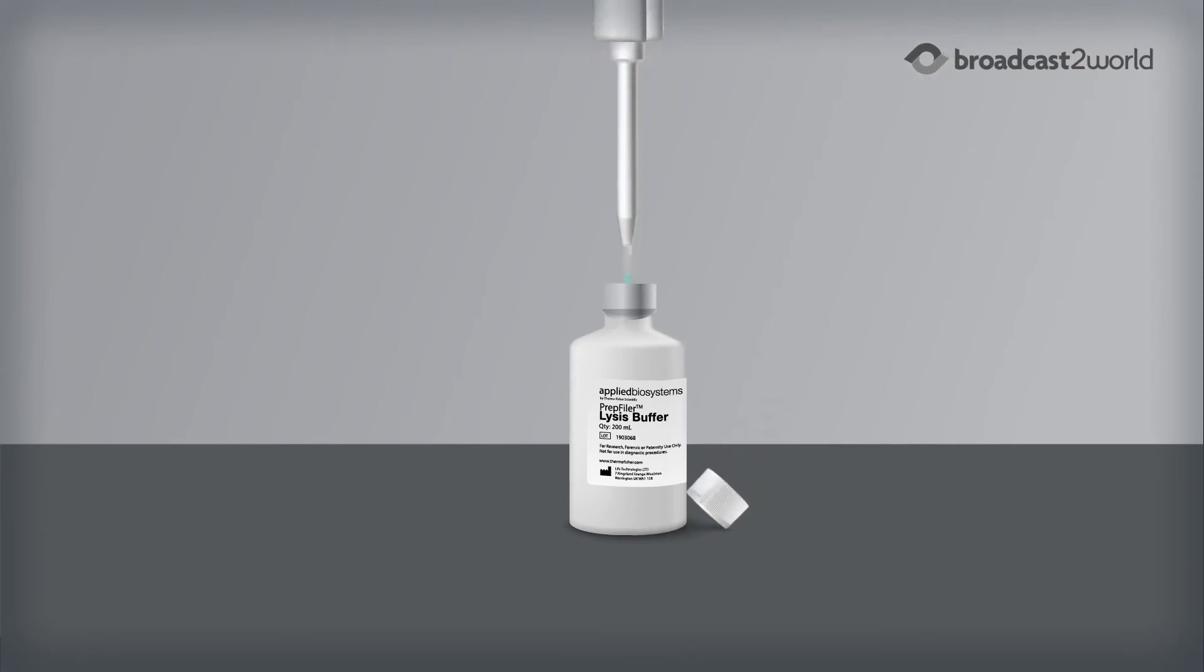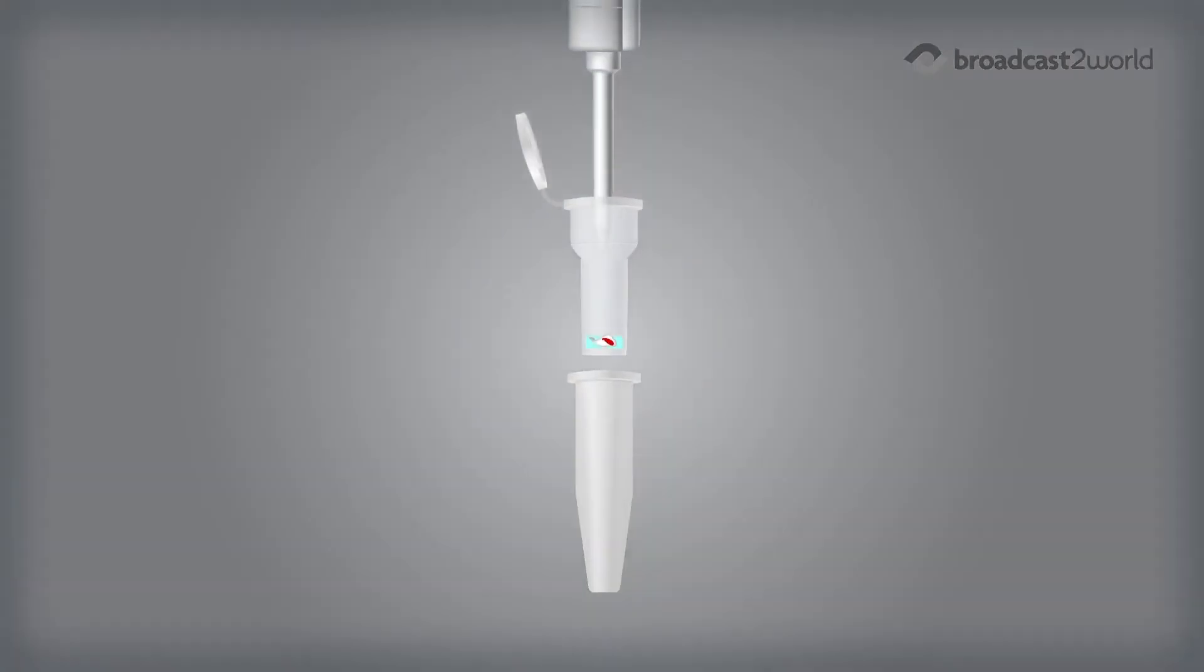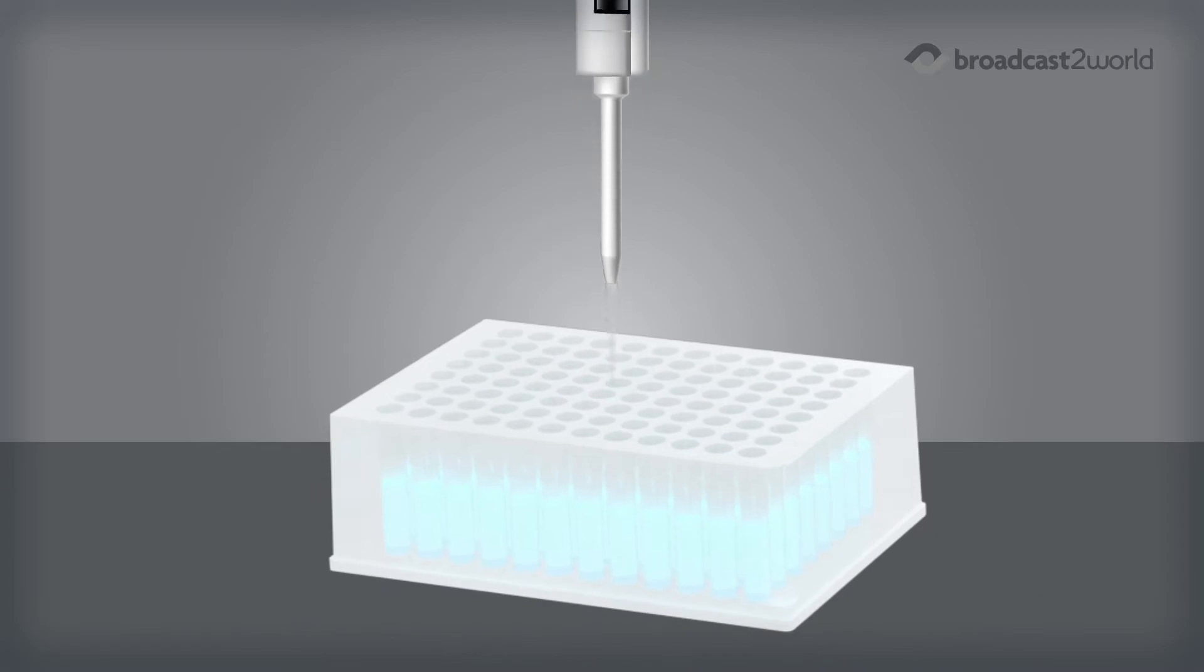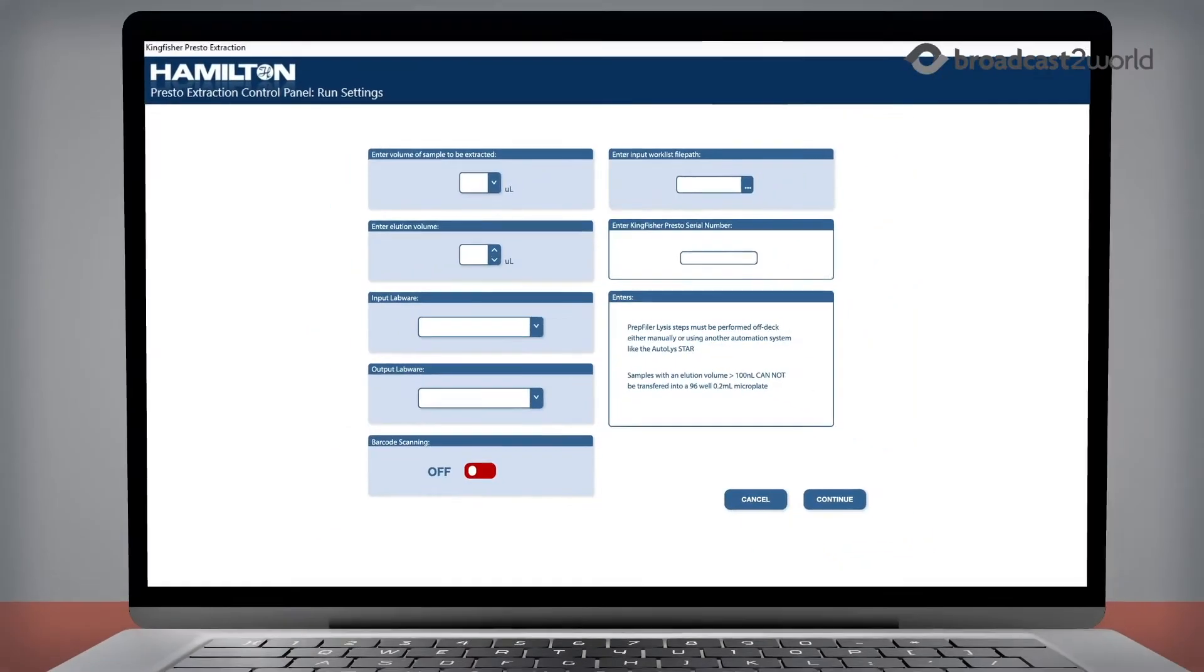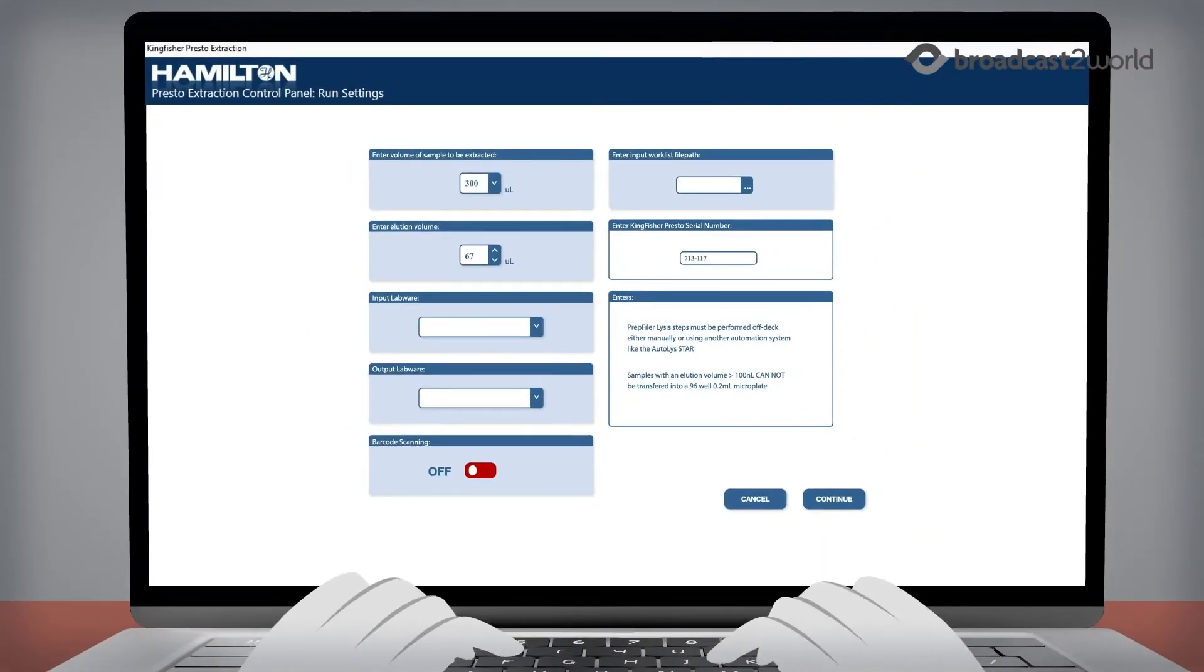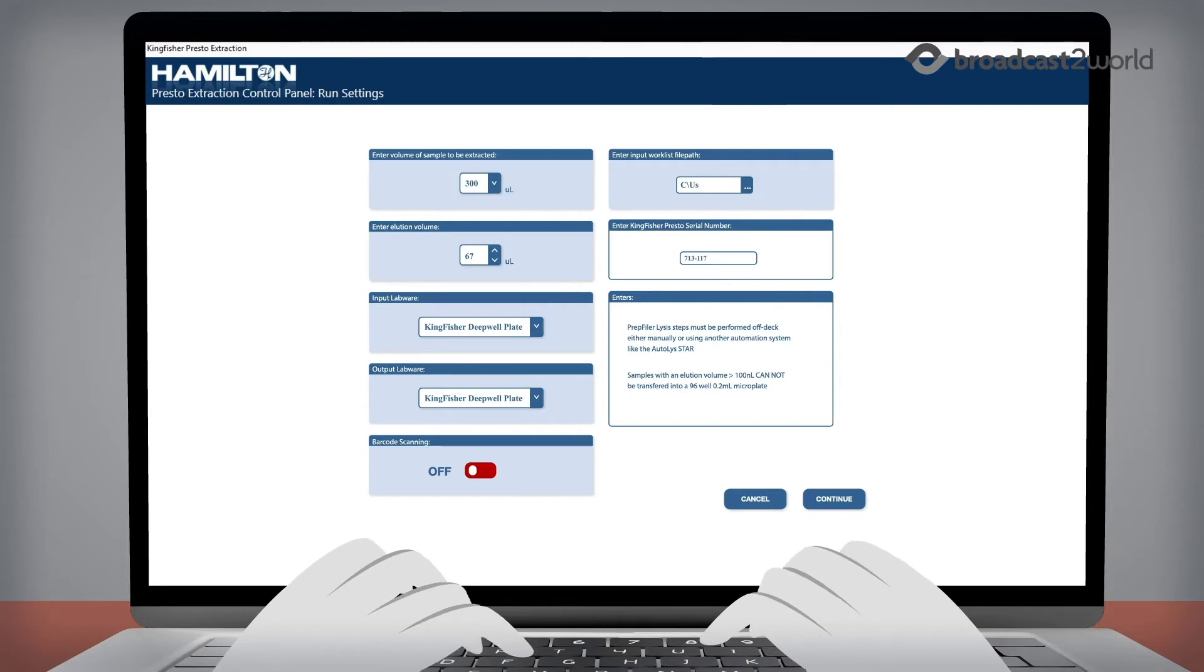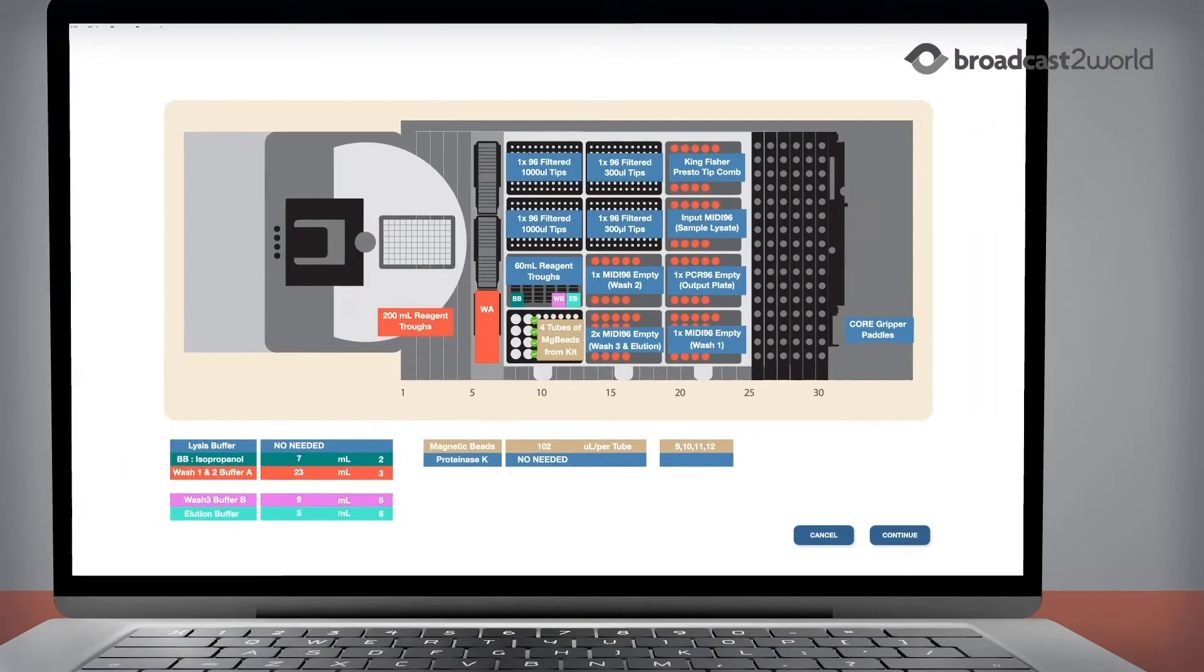The workflow is simple. After lysis, samples are loaded onto the ID Nimbus Presto System. Tubes or a plate can be loaded onto the system. The software walks the analyst through defining the number of samples to be run, input-output, and where to load specific reagents.